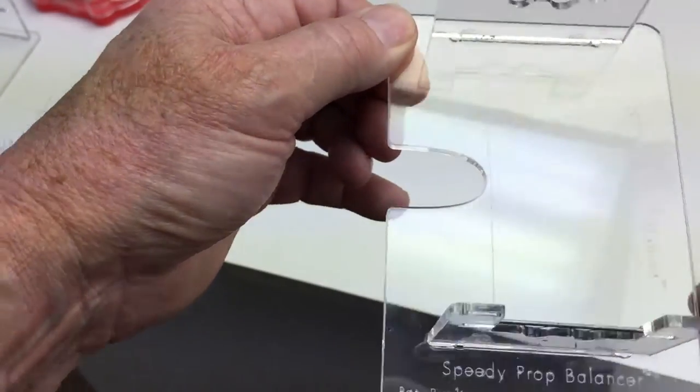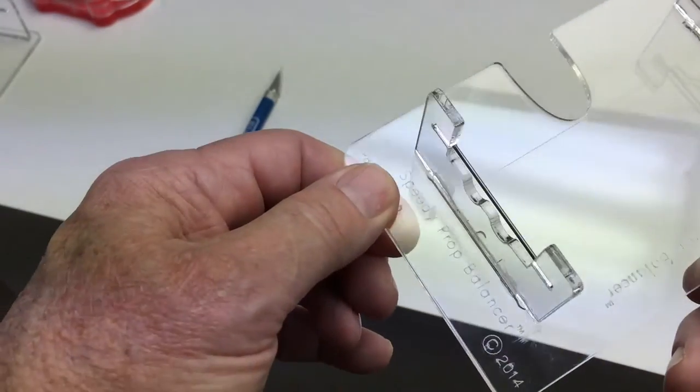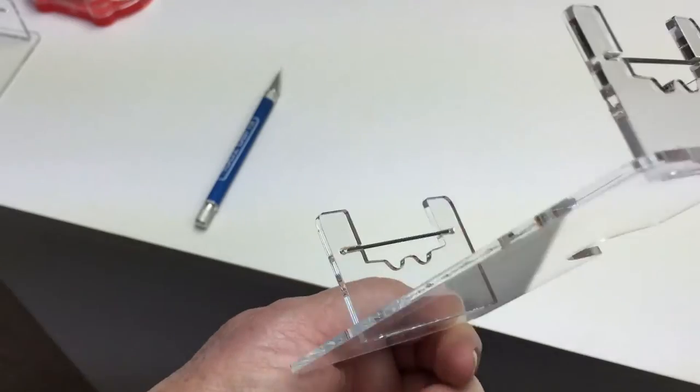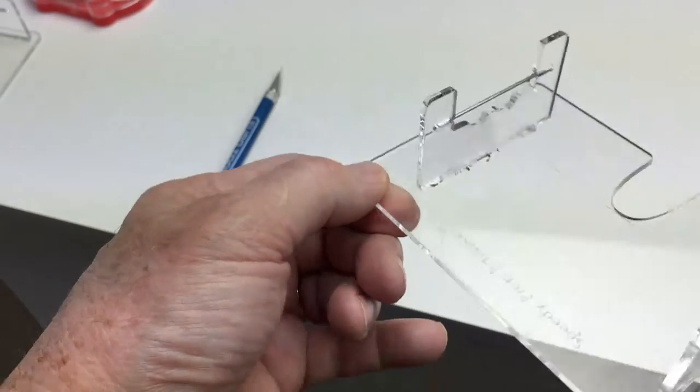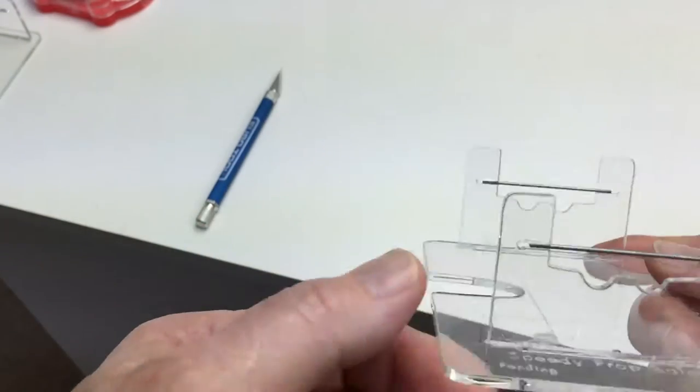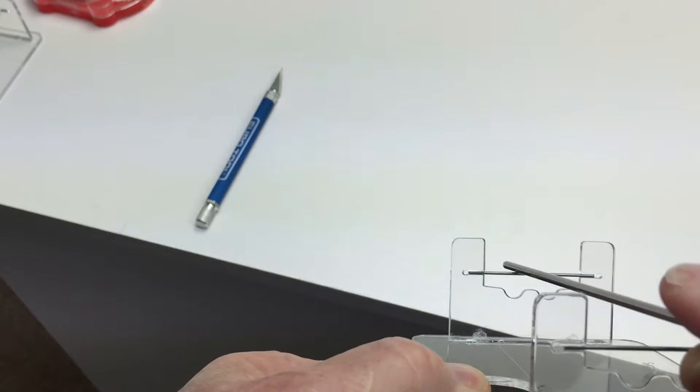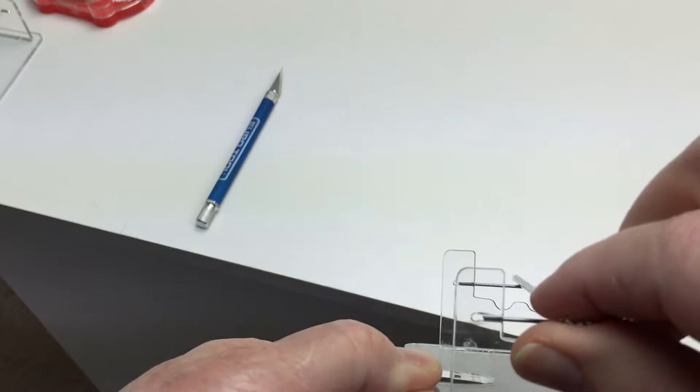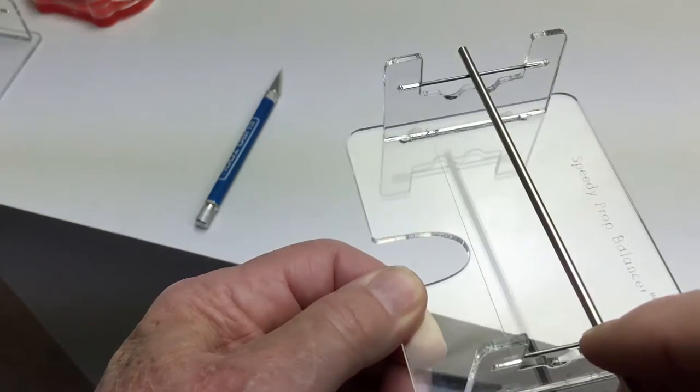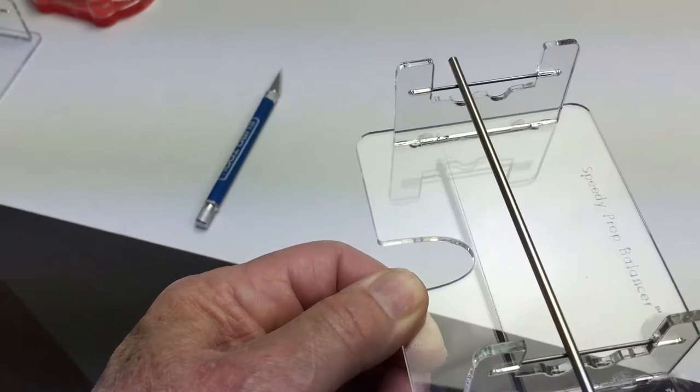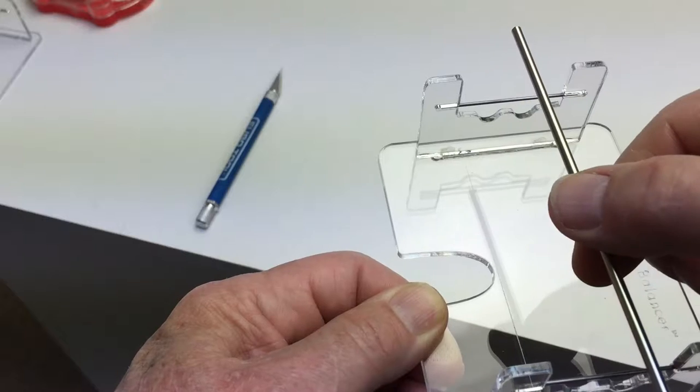As you can see, that slot will take a fairly large prop, probably up to a 16 inch prop or bigger. This thing is very sensitive. There's only two points of contact with that rod, as you can see it's very sensitive and makes for a highly accurately balanced prop.